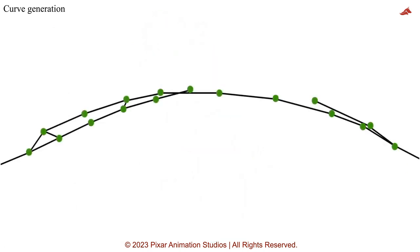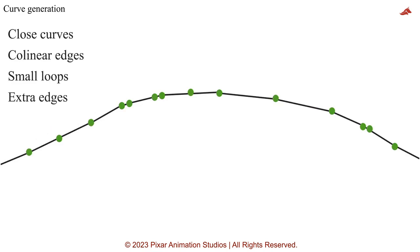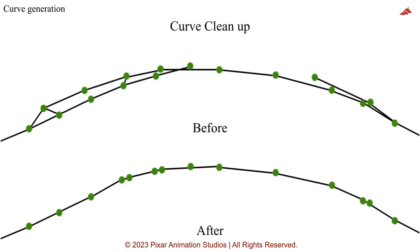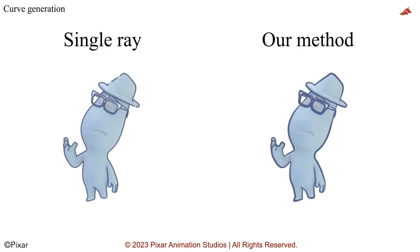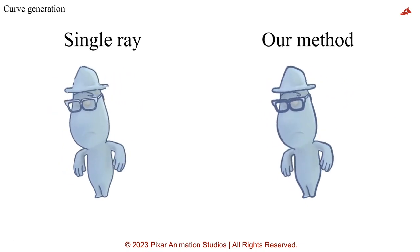Our next step is to clean up the lines in 2D to reduce clutter and pops. First, curves that are close together are merged. Next, along a curve, edges which are almost parallel to each other are detected and the shorter edge is deleted. We also delete small loops and extra edges. This method creates a single smooth curve from multiple curves that are close together, producing cleaner and more consistent curves than just using a single ray visibility test.